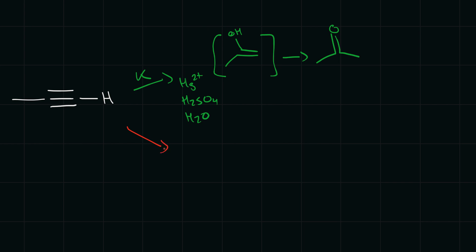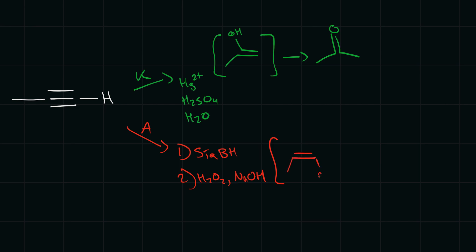Now if we wanted the carbonyl group on the terminal carbon instead, that would be anti-Markovnikov addition. To do that we use a two-step process: first, add disiamylborane; second, add hydrogen peroxide and sodium hydroxide (H2O2/NaOH). This does the same enol process, but the alcohol group ends up on the carbon with the most hydrogens — the less substituted one — and this creates our preferred aldehyde. Notice the first method is Markovnikov addition; the other is anti-Markovnikov.